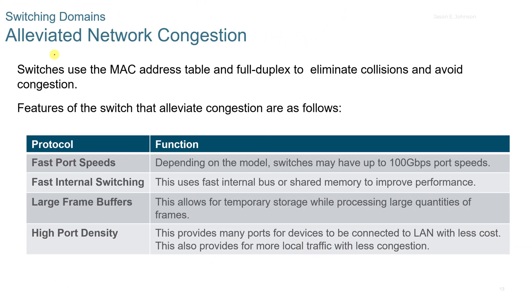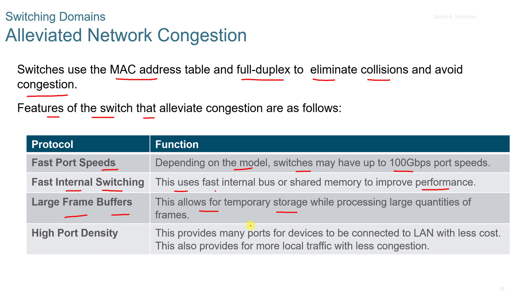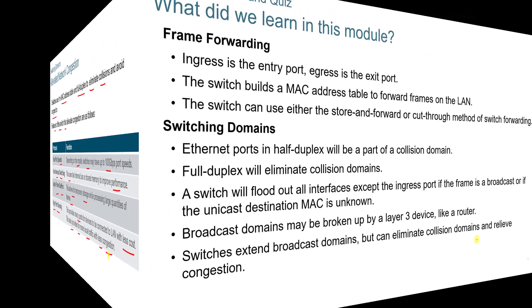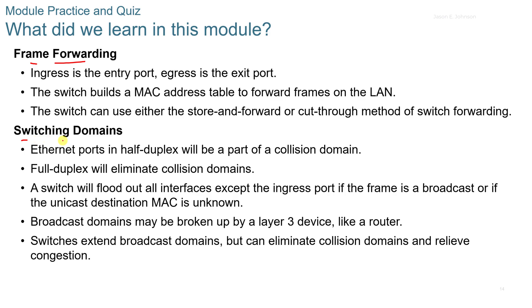To alleviate network congestion, switches use the MAC address table and full duplex to eliminate collisions. Switch features that alleviate congestion include: fast port speeds — up to 100 gigabit depending on the model; fast internal switching using a fast internal bus and shared memory; large frame buffers for temporary storage when processing large quantities of frames; and high port density, which provides many ports for LAN devices at less cost and supports more local traffic with less congestion. In summary, this module covered frame forwarding and switching domains.